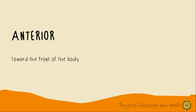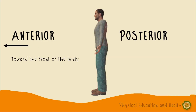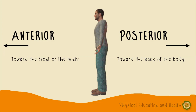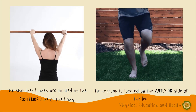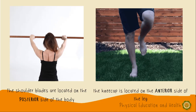The last two directional terms are anterior and posterior. Anterior is toward the front of the body, while posterior is toward the back of the body. Gagamitin lang natin si anterior if we are describing parts of our body that are on the front surface, and posterior for parts on the back surface. For example, the navel or pusod is on the anterior surface of the body, while the heel is on the posterior surface. Other examples: the shoulder blades are located on the posterior side of the body, and the kneecap is located on the anterior side of the leg.